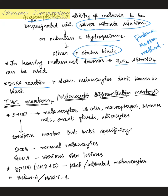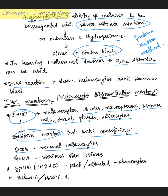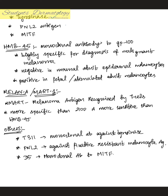Immunohistochemical markers — also called melanocyte differentiation markers — include: S100, which is also expressed in Langerhans cells, macrophages, sweat glands, adipocytes, and Schwann cells, making it a sensitive but non-specific marker. S100B stains normal melanocytes. GP100 stains fetal or activated melanocytes. Melan-A (MART-1) and tyrosinase are also used. HMB45 is a monoclonal antibody to GP100; it is highly specific for the diagnosis of malignant melanoma and is negative in normal adult epidermal melanocytes.